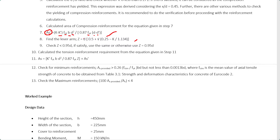You know K and D, so you can calculate Z. You have to check whether Z is less than 0.95D — same as in British Standard. If Z is greater than 0.95D, you must use Z = 0.95D. You have to make sure to perform this check.